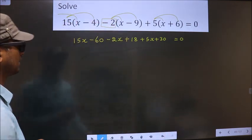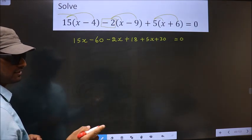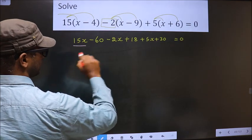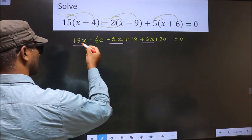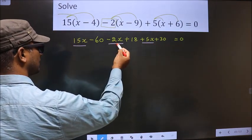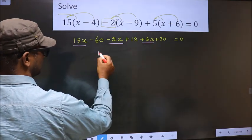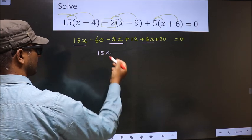Next, now simplifying the like terms. First x terms, that is 15x minus 2x and plus 5x. So 15x minus 2x is 13x, 13x plus 5x is 18x.